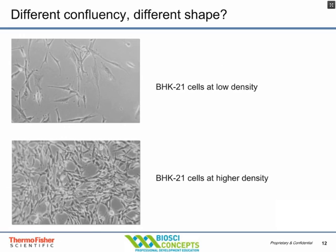Look at cells at different confluencies and different shapes. Here we can see some baby hamster kidney cells grown at low and high confluency — they look fairly different from one another. Low-density and high-density photographs are important. When your cells are growing at low density, that's the time to look morphologically for cell problems and contamination.